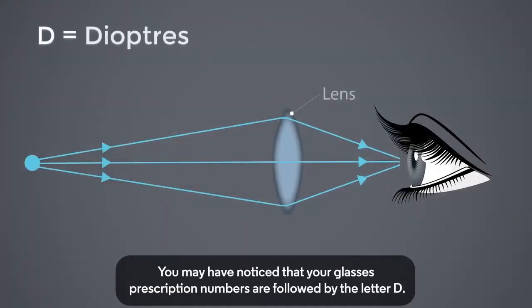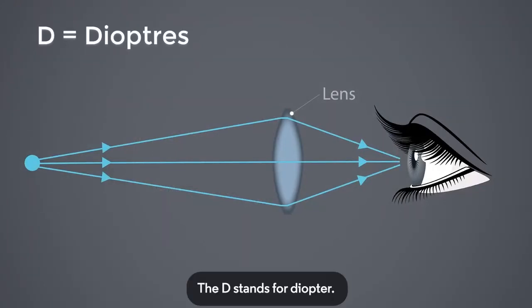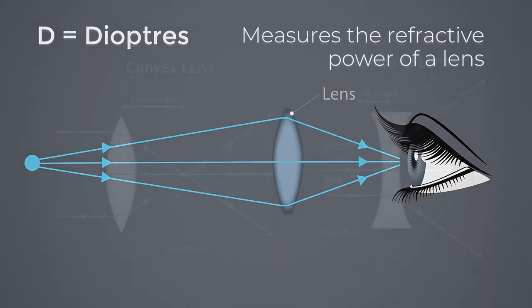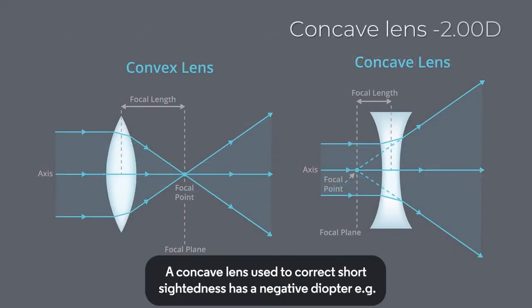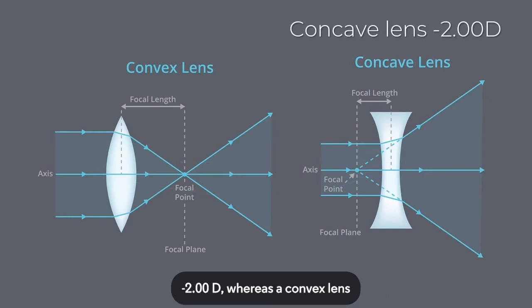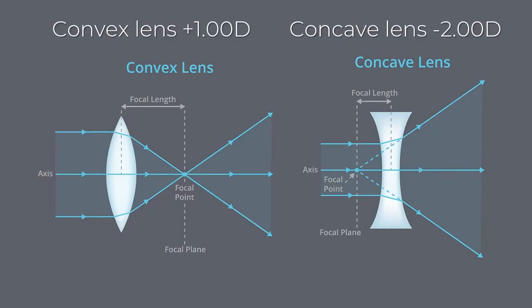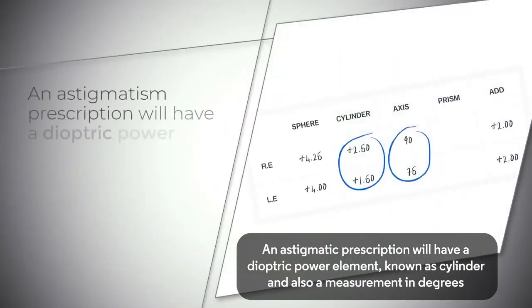You may have noticed that your glasses prescription numbers are followed by the letter D. The D stands for diopters — the unit that measures the refractive power of a lens, or its ability to bend light passing through it. A concave lens, used to correct short-sightedness, has a negative diopter, for example minus 2.00D, whereas a convex lens, used to correct long-sightedness, has a positive diopter, for example plus 1.00D.